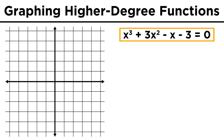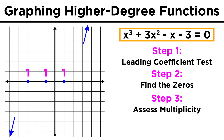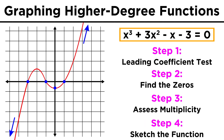So now we have a solid strategy for graphing higher degree polynomials. Start with the leading coefficient test to find the end behavior of the function. Then find the zeros of the function by whatever method necessary — whether factoring, or the rational roots test and synthetic division. Then assess the multiplicity of each zero to find out whether the function will cross or just touch the X axis at each zero. If we want one more additional point, we can easily get the Y intercept by plugging in zero for X, which will take just a few seconds. Then, obeying the end behavior of the function, we sketch the graph.